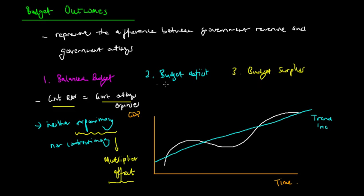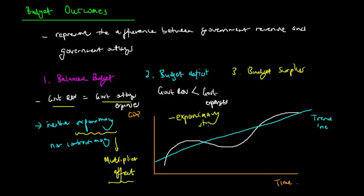Secondly, we have a budget deficit. This is where government revenue is less than government expenses. Because government expenditure is greater than revenue, this is a rather expansionary stance. This typically occurs when GDP growth is less than trend — so somewhere in that below-trend region we will see a government budget deficit.